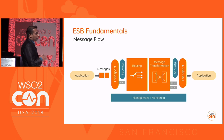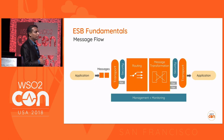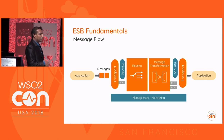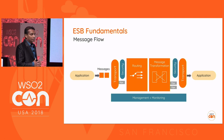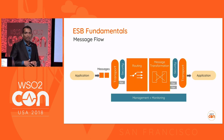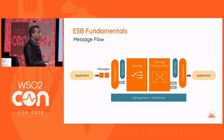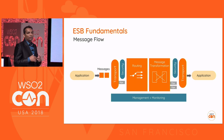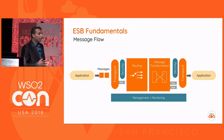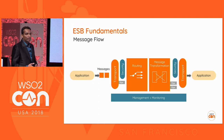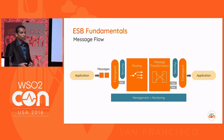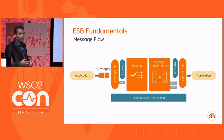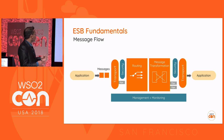The transport layer takes care of converting the wire level message into some kind of object representable in the mediation engine, which we call a message context. Once the message context is created, it is passed to another layer called the quality of service layer, where aspects like message level security get resolved. Once the quality of service aspects are resolved, the plain message context is passed to the mediation engine, where we do routing, orchestration, transformation — all those things.